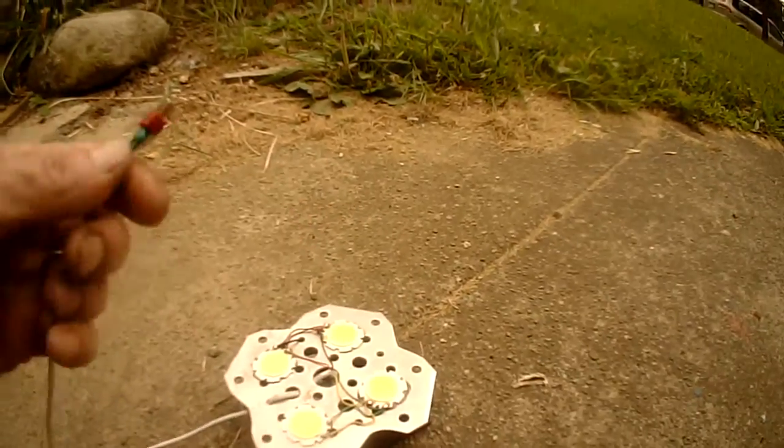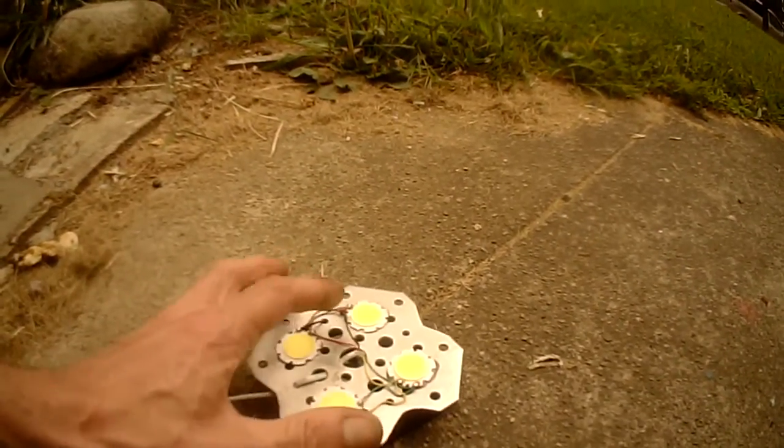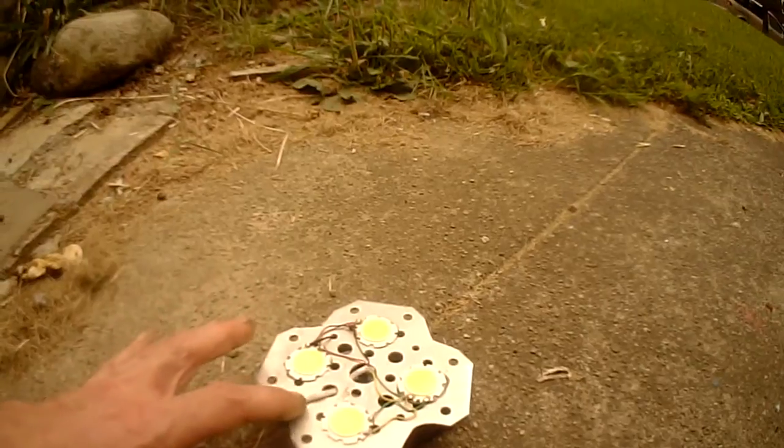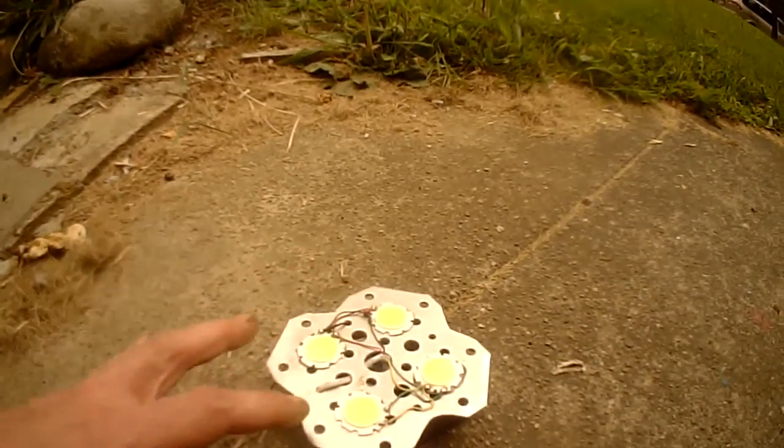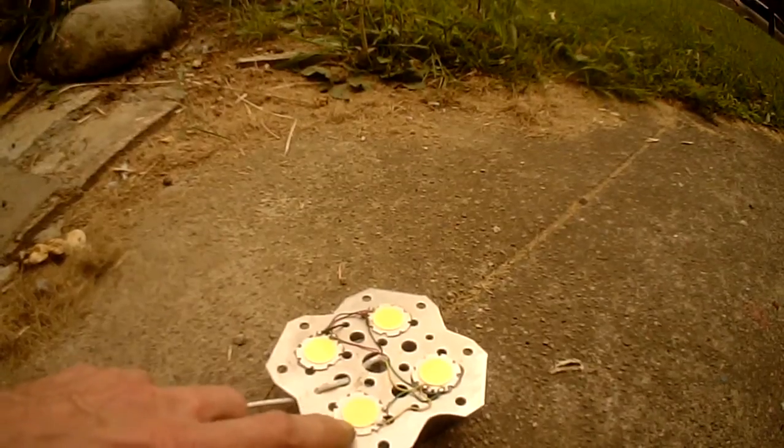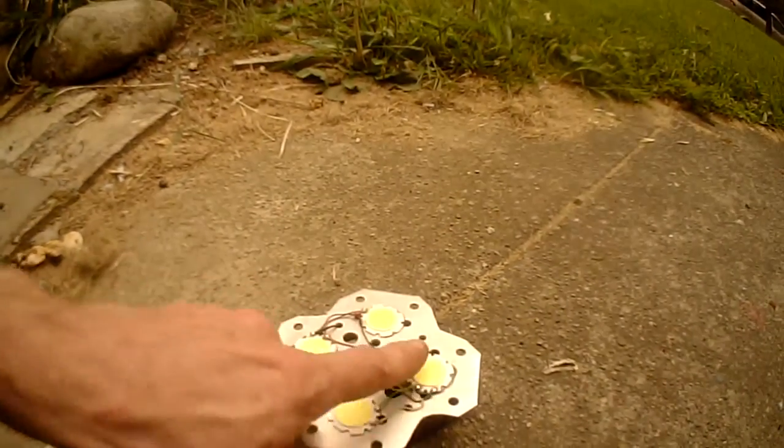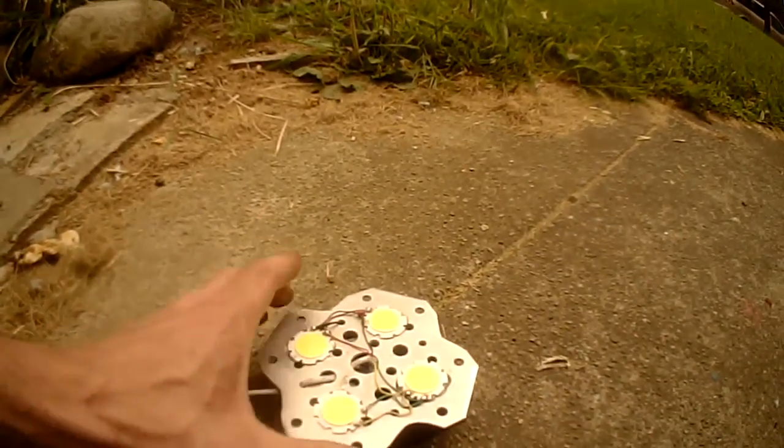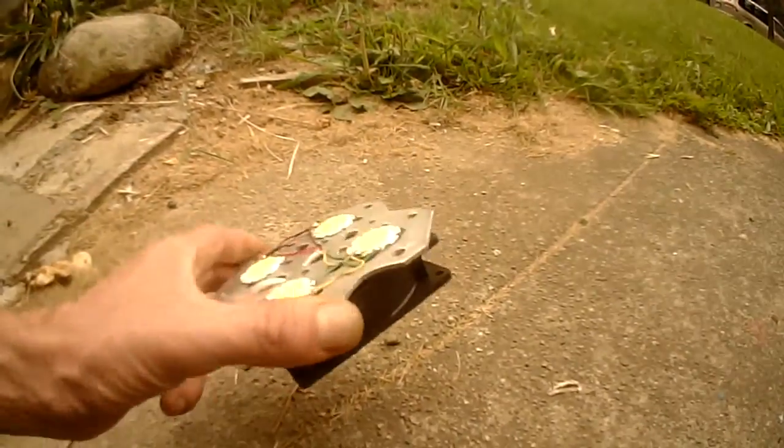Then I can plug that in and the fan will turn on and blow air throughout these holes here, which were lightning holes for the quadcopter, and cool off the aluminum that's heating up from the base of each one of these three watt LEDs. Yeah, that's what I'm going to use for a spotlight. It works quite well.